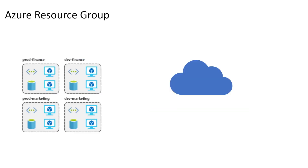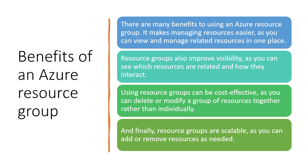For instance, we can have a prod finance resource group where all related components for that application live, and a dev finance resource group as well. Similarly, there will be a marketing resource group and a dev marketing resource group. That's how we use resource groups to organize our resources.